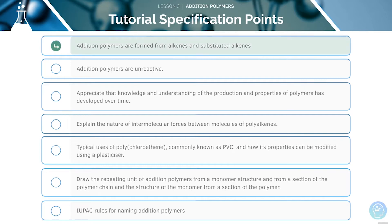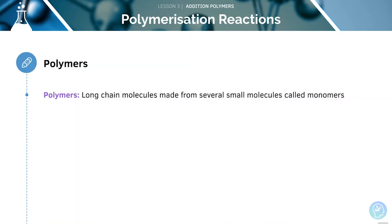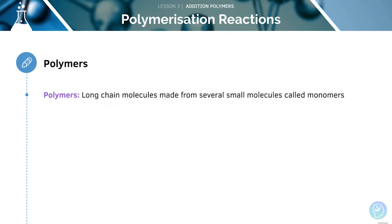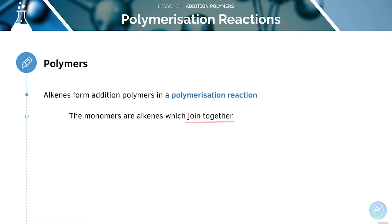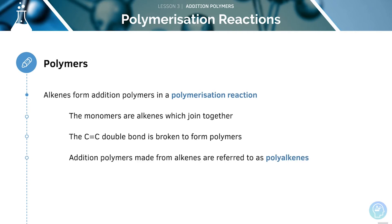We'll start by looking at how addition polymers are formed. Polymers are long-chain molecules made from several smaller molecules known as monomers. Alkenes form addition polymers through polymerisation reactions. The monomers in the reaction are alkenes which join together, and after the carbon-carbon double bond is broken, the addition polymers made from alkenes are referred to as polyalkenes.